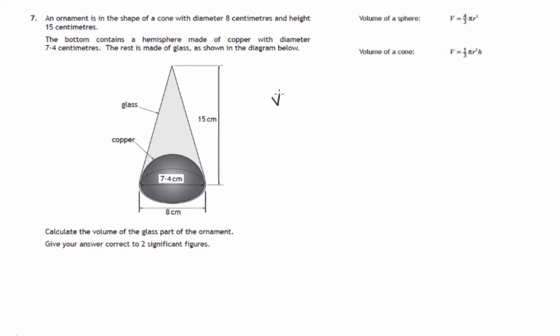So you would be looking at working out the volume of the cone and then subtracting the volume of half of the sphere. And the radius that we'd be using for the volume of the cone would be half of this diameter 8. So the radius would be 4 there.